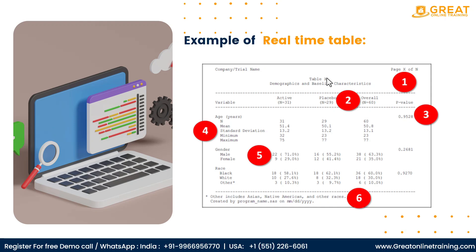In real time, there are sections — 14.1.1, 14.2.1 — so there are numbered sections. One table that is used is demographics and baseline characteristics. There is an age-wise analysis, and we are able to calculate the age-wise analysis.